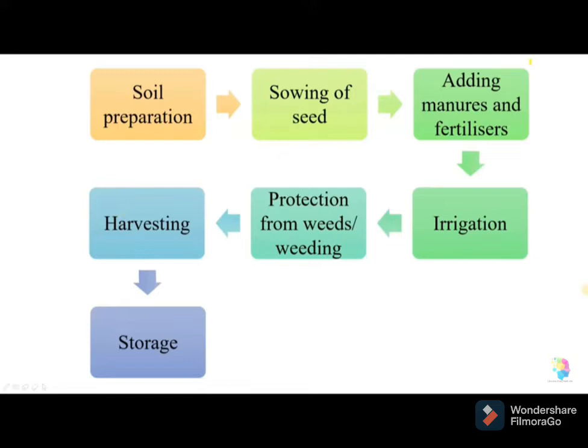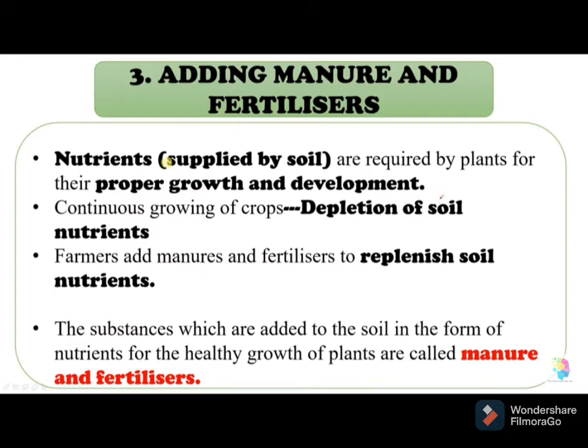The next agricultural practice is adding manure and fertilizer. Manure is a natural fertilizer, while fertilizer is a chemical substance. Manure is organic matter obtained from the decomposition of dead plants and animal waste by the action of microorganisms. It supplies nutrients and organic material to the soil, increasing its fertility. Manures are natural fertilizers and are of four types: farm yard manure, compost, vermicompost, and green manure.